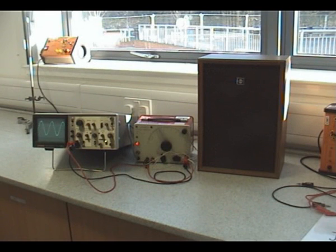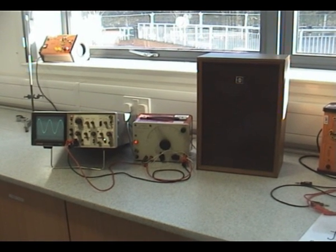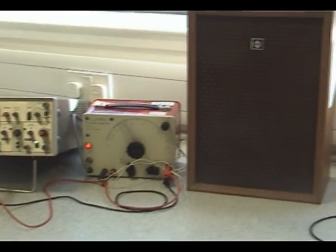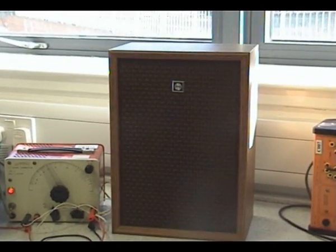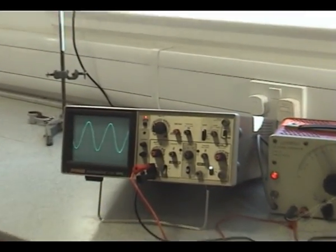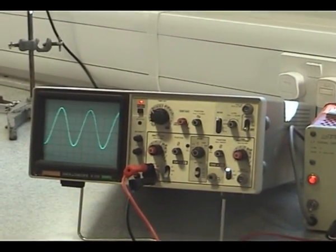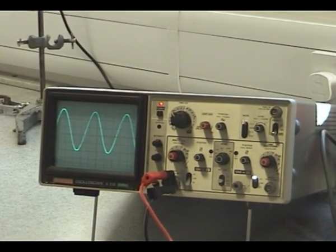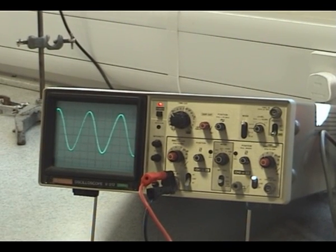How do we measure frequency on a CRO? We've got a signal generator connected to a loudspeaker, and the output of the signal generator is also connected to the cathode ray oscilloscope. The cathode ray oscilloscope will give us a picture of that frequency on the screen.